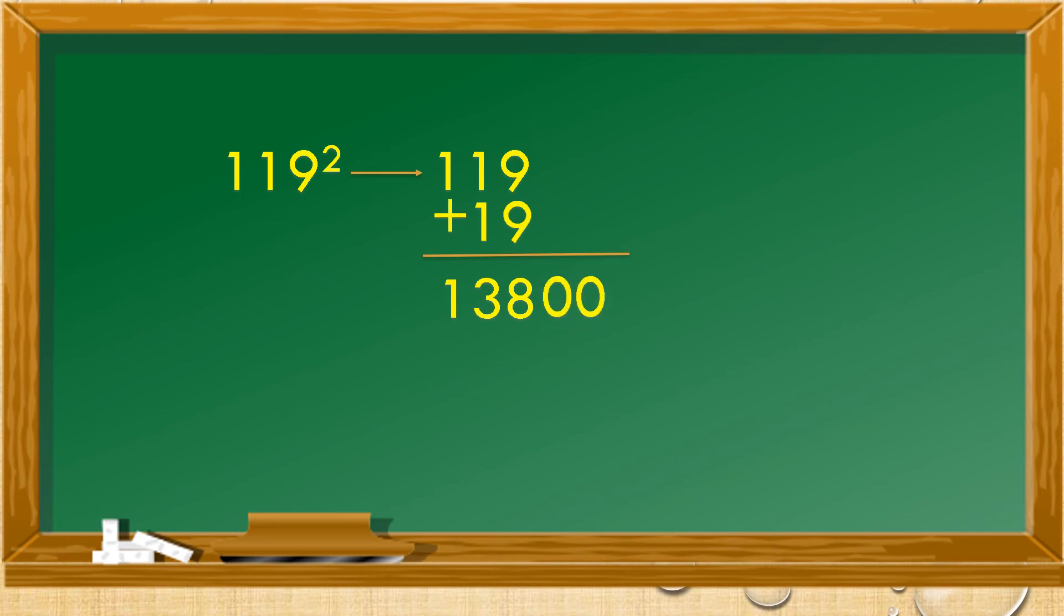Suffix two zeros and then like before, we will add the square of 19, that is 361, to our number, which will give us the square of 119 as 14161. I hope you did.